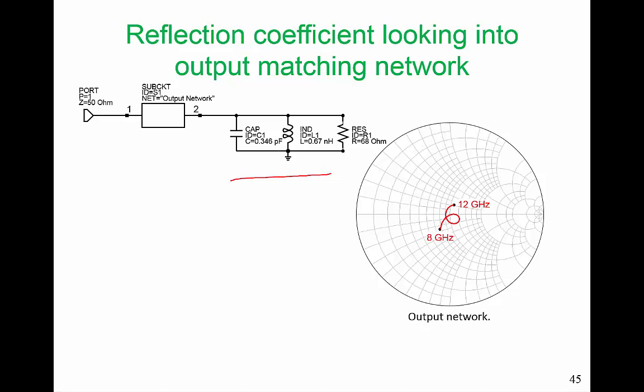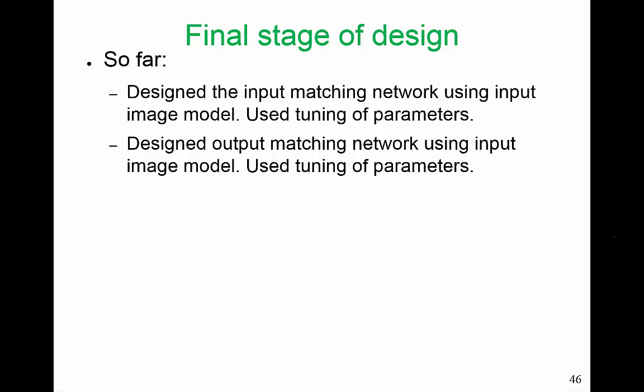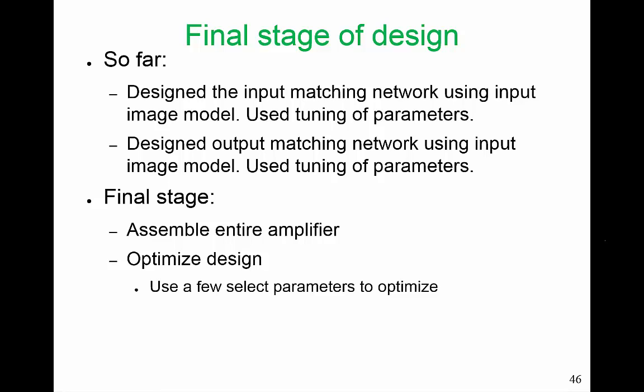We're near the very final stage of design now. We have designed the input matching network using the input image model with tuning of parameters, and we designed the output matching network using the amplifier image model with tuning of parameters — in fact, designing both together since there were only five parameters. We started by tuning the input network, then moved to the output, then back to the input, and you don't need to iterate very much to get a fairly good design. In the final stage, we assemble the entire amplifier — the real input network, the transistor, and the real output network — and then do optimization of the whole design, selecting only a few parameters.